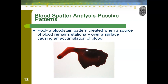Next, we can have what is called a pool — a bloodstain pattern created when a source of blood remains stationary over a surface, causing an accumulation of blood. The most common example is when someone is bleeding out. They're laying perfectly still because they probably can't move, and they continue to bleed, so a pool of blood forms around the body.